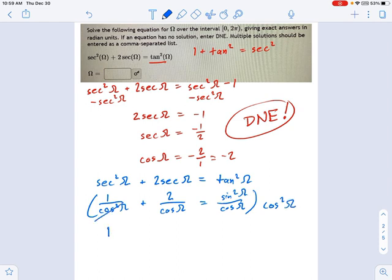So what do we get? Those cross out. We get one plus this crosses out, and we still have a cosine left over. So that's one plus two cosine omega equals, and these cross out, giving us sine squared omega.